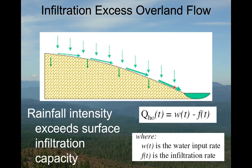Mathematically, the volume of overland flow at a given time is a function of the water input rate w(t) — that's the rainfall rate — minus the infiltration rate f(t).